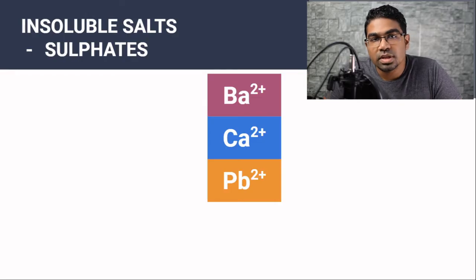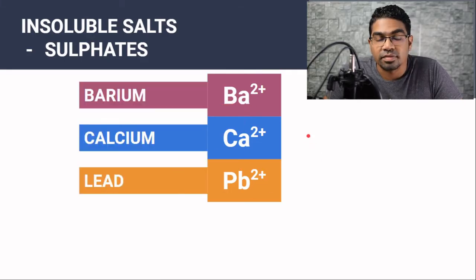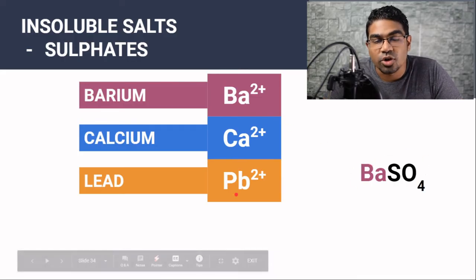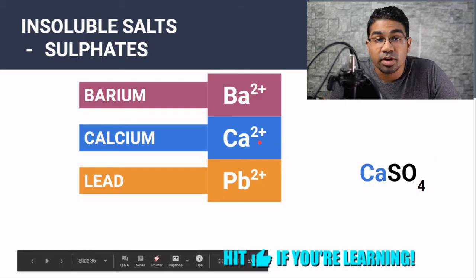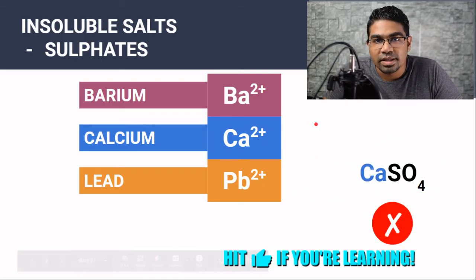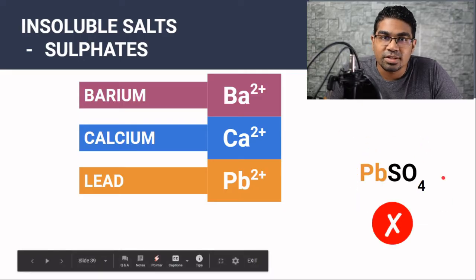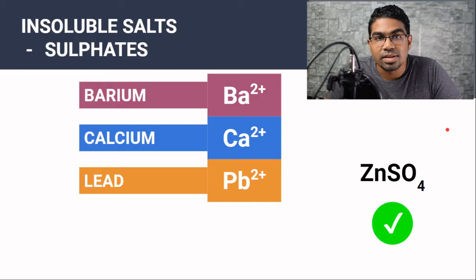The insoluble sulfates are BACCAP — barium, calcium, and lead sulfate. If we had barium sulfate, barium is part of BACCAP and therefore it is insoluble. Calcium sulfate: calcium is also part of BACCAP and therefore it is insoluble. Lead sulfate — same thing, insoluble. But zinc sulfate: zinc is not part of BACCAP and therefore zinc sulfate will be soluble.